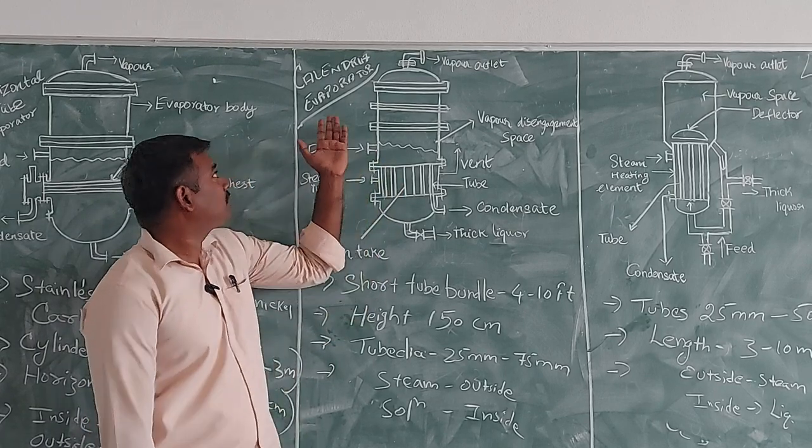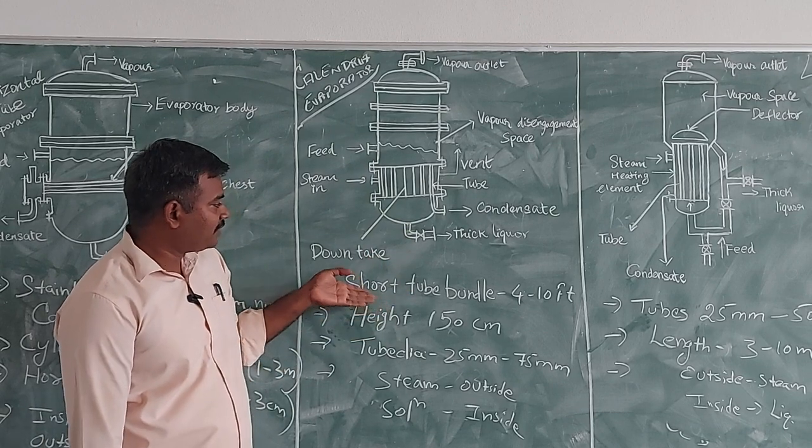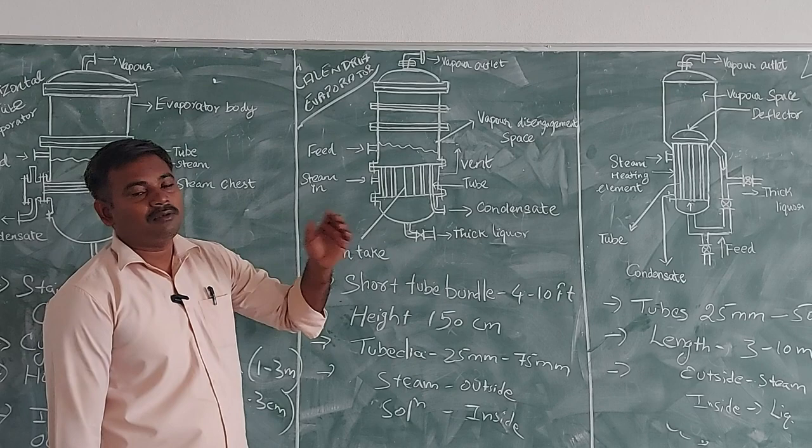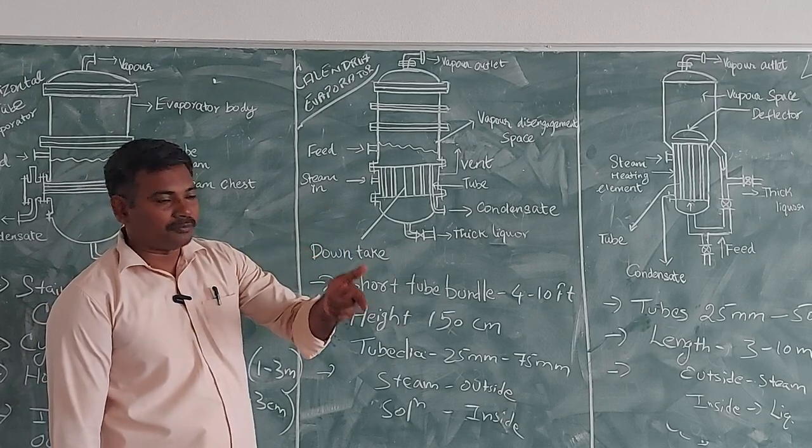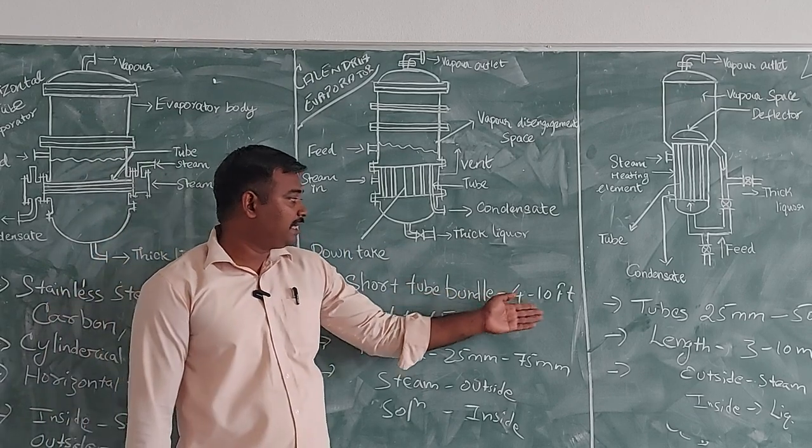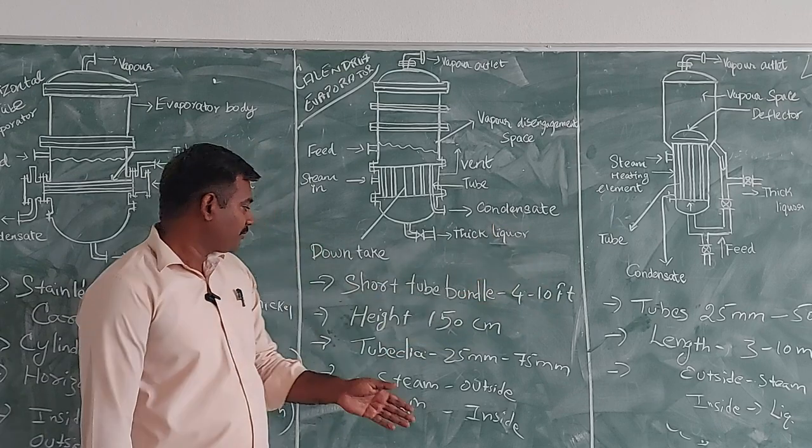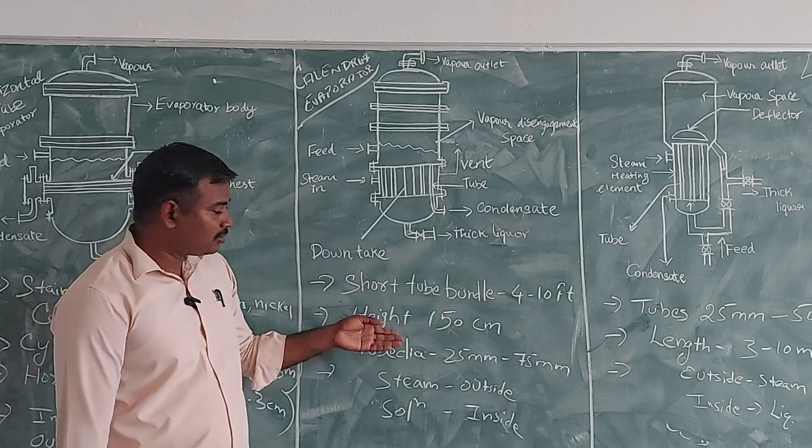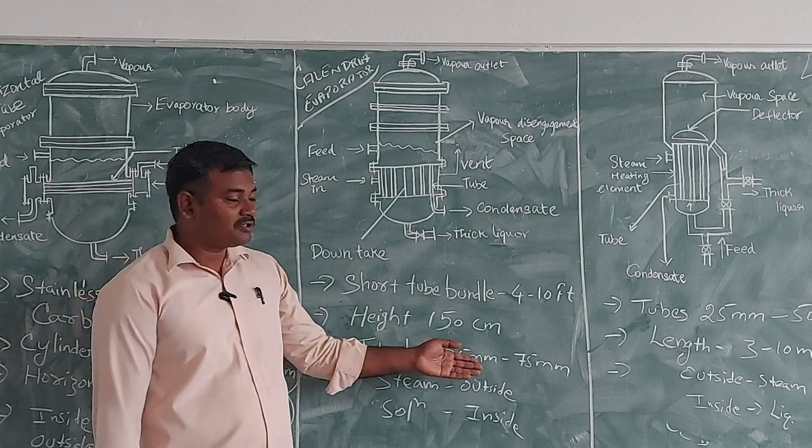So the constructions of your Calandria Evaporator will be, it will be having a short tube bundle itself. So tube bundle indicates the bundle which consists of the number of tubes. So which will be having the height length of 4 to 10 feet. And the height will be 150 centimeter of each tube. Then tube diameter will be 25 mm to 75 mm.